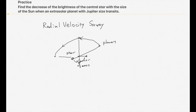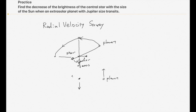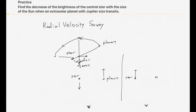Actually the star and the planet are moving around their center of mass. In this case, if the planet is moving away from us, then the star is moving toward us. Or if the star is moving away from us — that is our observation — then the planet is moving toward us.